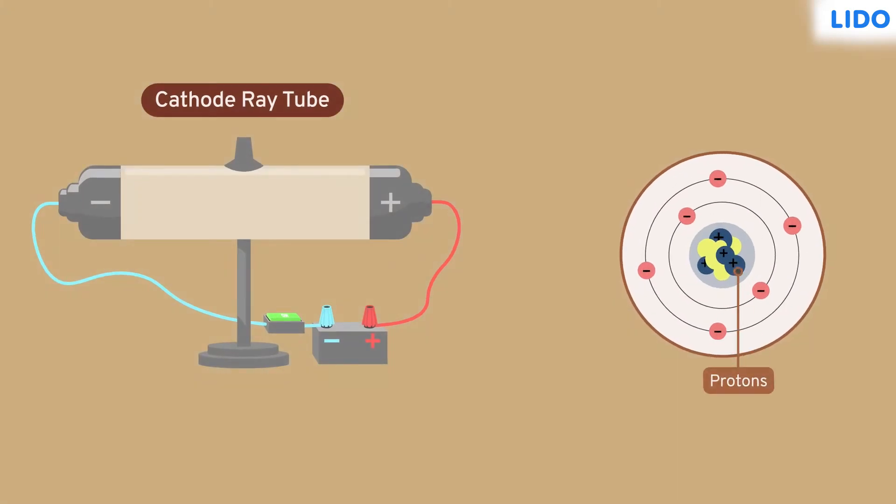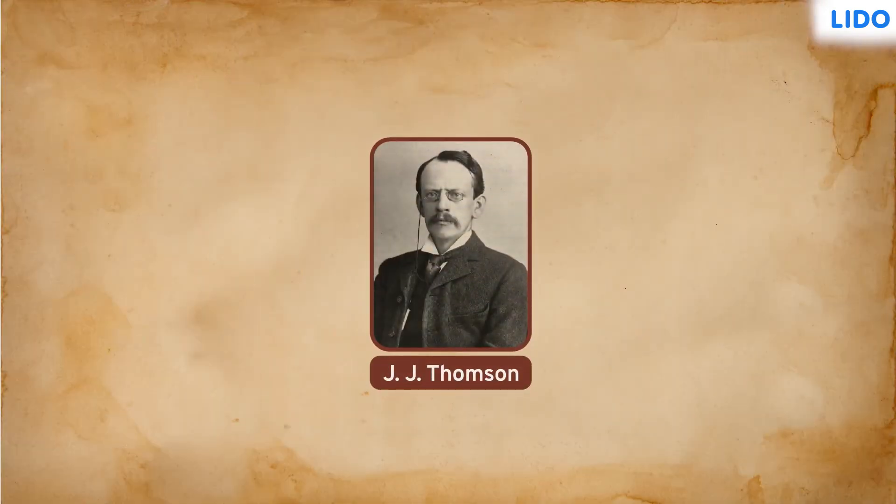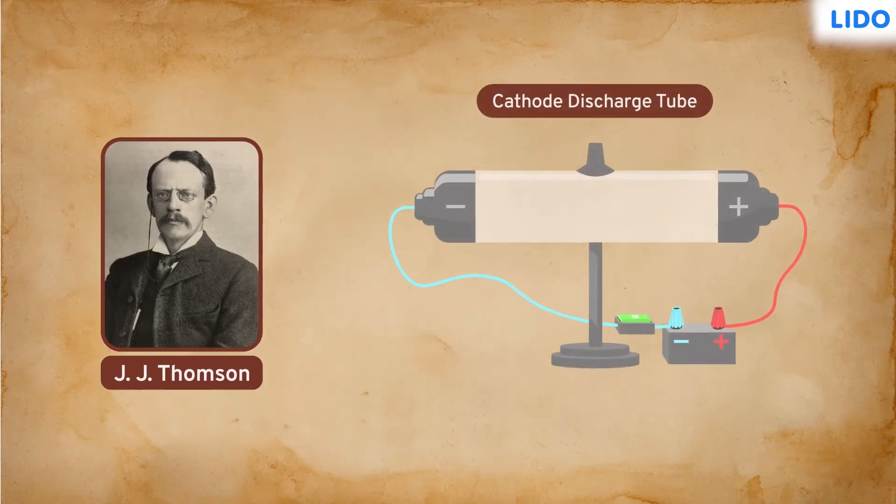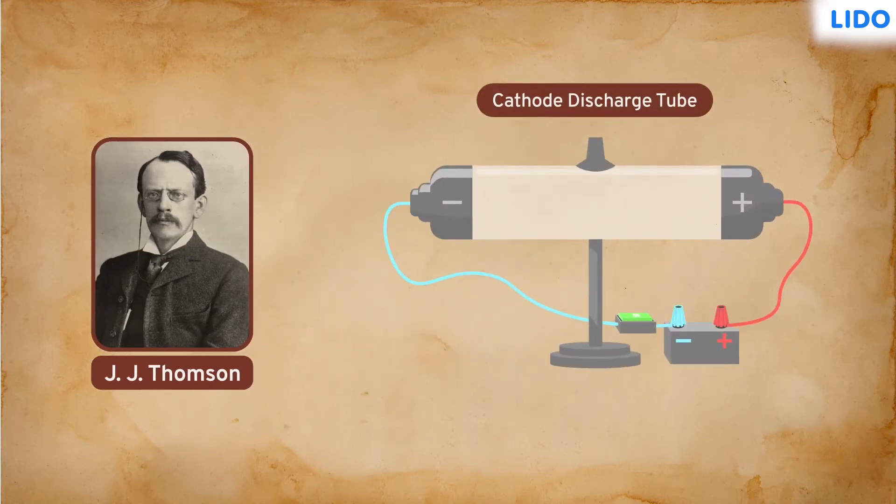But did you know that cathode ray tubes played a major role in the discovery of subatomic particles? In 1897, J.J. Thompson studied a cathode discharge tube with a metal plate fitted at either ends.